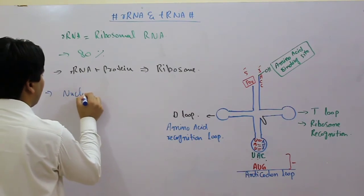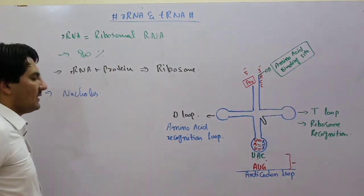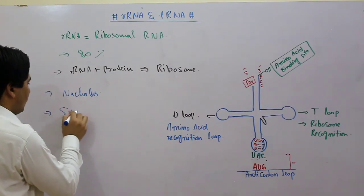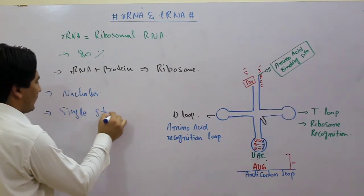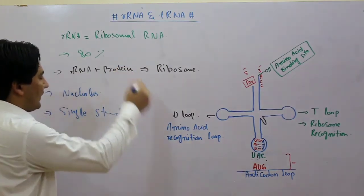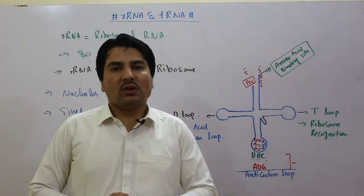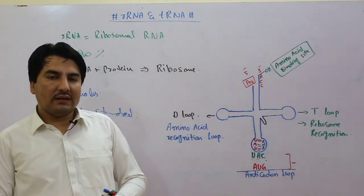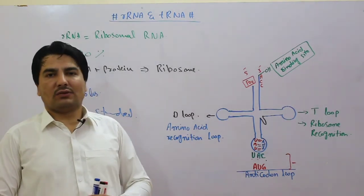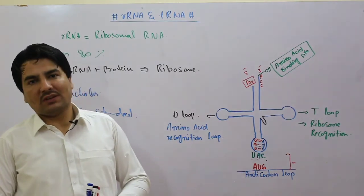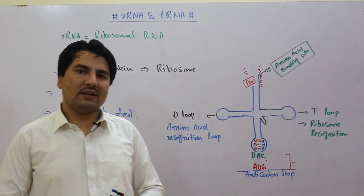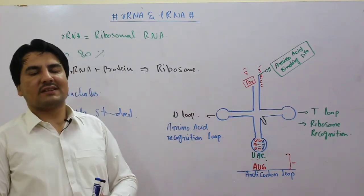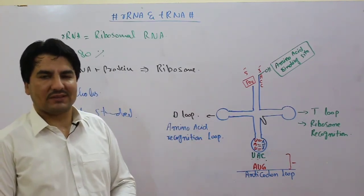Ribosomal RNA is synthesized in the nucleolus. This is also single-stranded. So this is all about ribosomal RNA. With this we have completed all three types of RNA, and we have also completed two different types of nucleic acid which are DNA and RNA. In the next video we will be discussing more about biomolecules. Thank you.